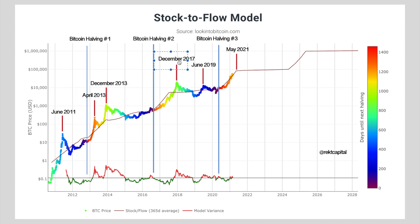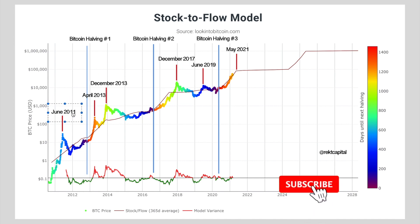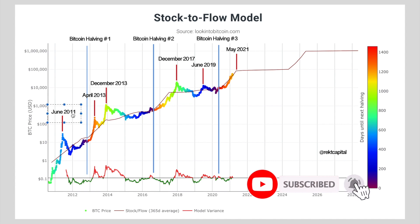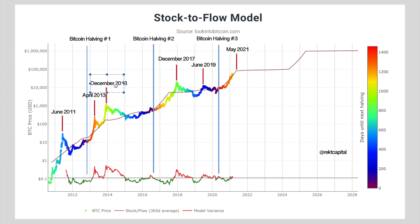So out of four significant upside deviations, we've seen a bull market top occur twice in Q2 and twice in Q4 at the end of December. That gives us a 50/50 chance, based on this historical analysis in the context of the stock to flow model, of there being a bull market top in Q2 or in December Q4. The key question is: will the bull market top occur in Q2 or in Q4 in December?